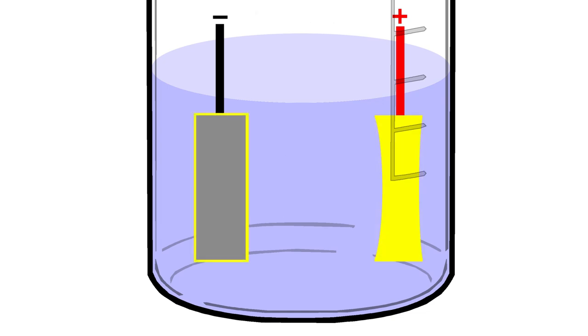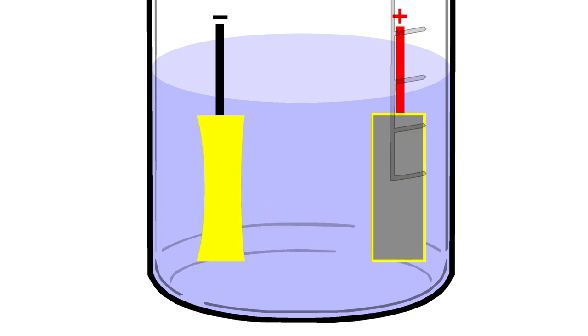To reverse the process, all we need to do is swap the electrodes. Now metal will be removed from the workpiece. To control where the metal is removed, a mask needs to be made to cover the areas we don't want etched.